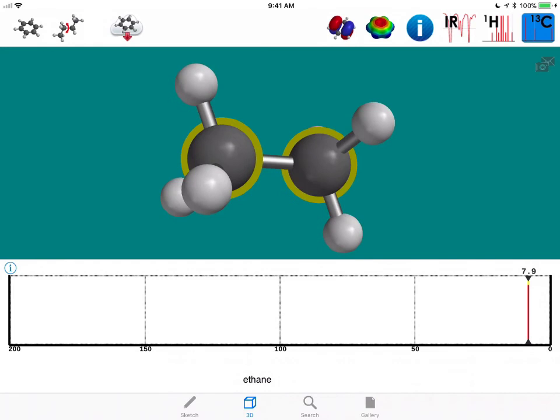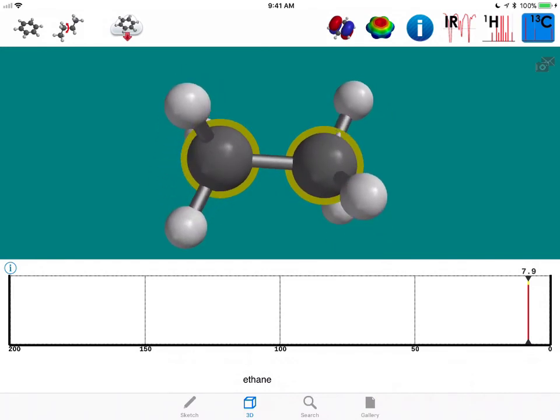In the carbon NMR, as you can see, there's only one unique type of carbon, and that occurs at 7.9 parts per million in the simulated spectrum.